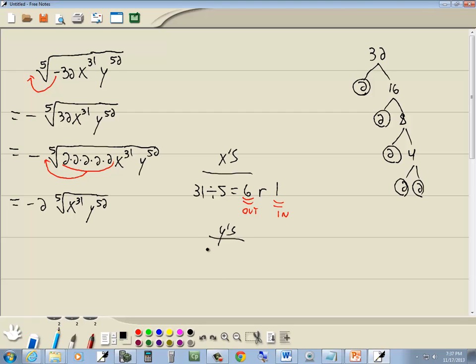Now, let's look at our y's. We're going to take our power, which is 52, divided by our index, which is 5. 52 divided by 5 gives us 10, with a remainder of 2.